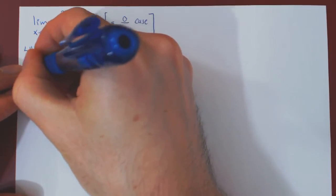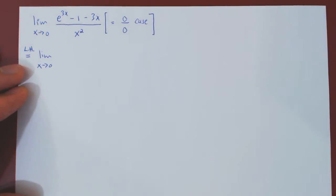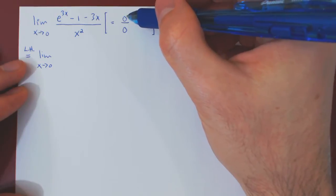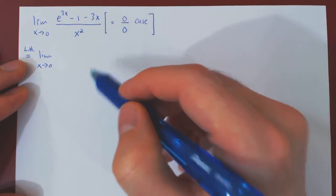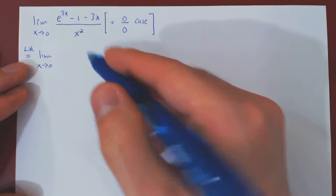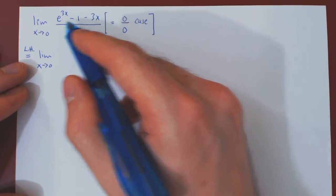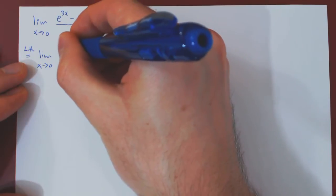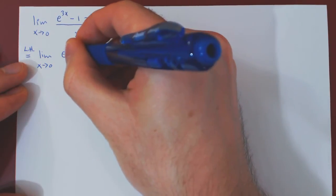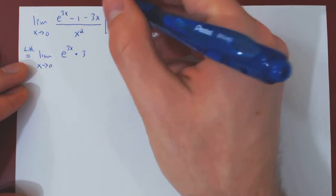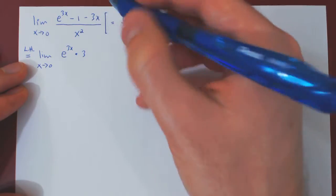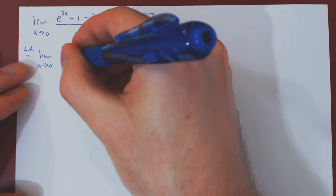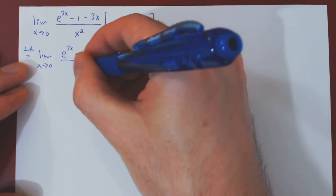L'Hôpital's rule says that in a 0 over 0 case, we can replace the numerator and denominator by their respective derivatives. Differentiating the numerator gives, by the chain rule, e to the 3x times 3, minus the derivative of 3x which is 3, so negative 3. The derivative of x squared is 2x.